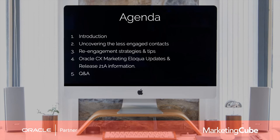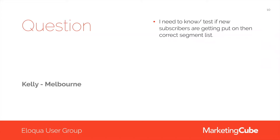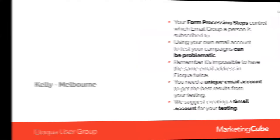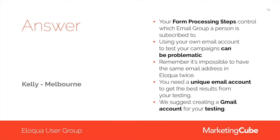We'll have Q&A at the end as well. The first thing we always do is look at questions submitted by people as they registered. The first one is from Kelly in Melbourne — Kelly wants to know how to test if new subscribers are being put onto the correct segment list. There are a few things at play here, so let's dive in and look at some answers to that question.